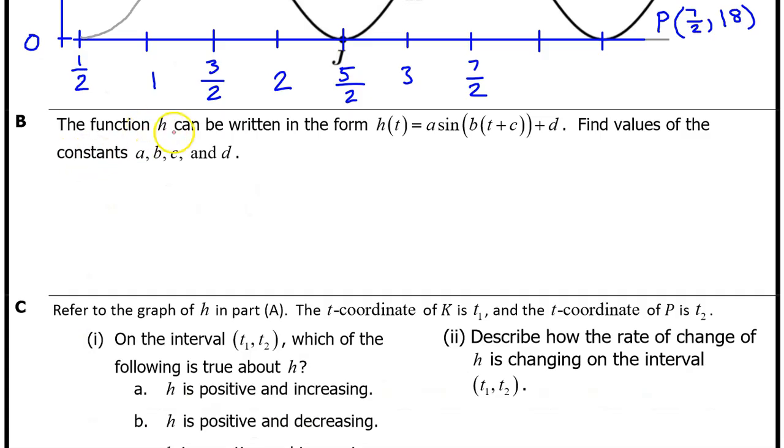Part B. The function h can be written in the form h of t is equal to a sine b times t plus c plus d. Find the values of the constants a, b, c, and d. Let's build an expression for h of t, filling in the values of a, b, c, and d as we go along.